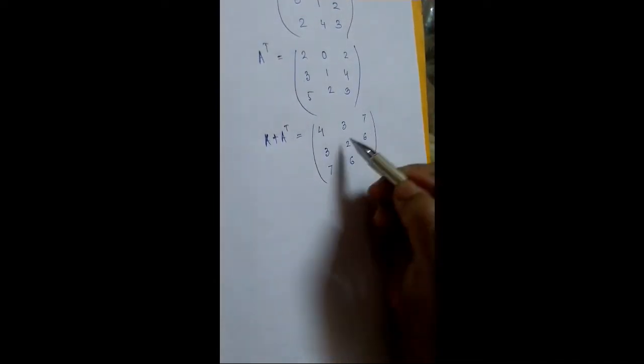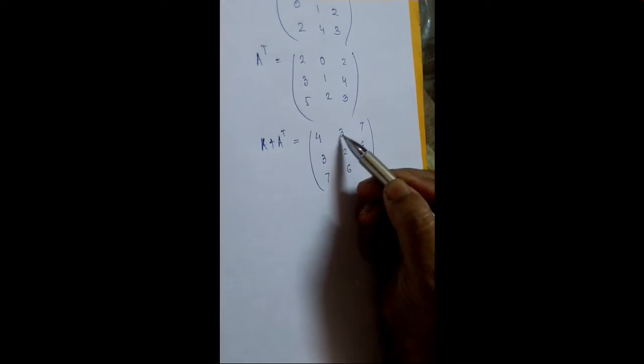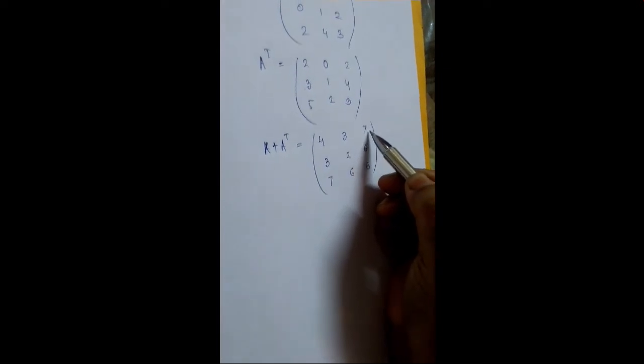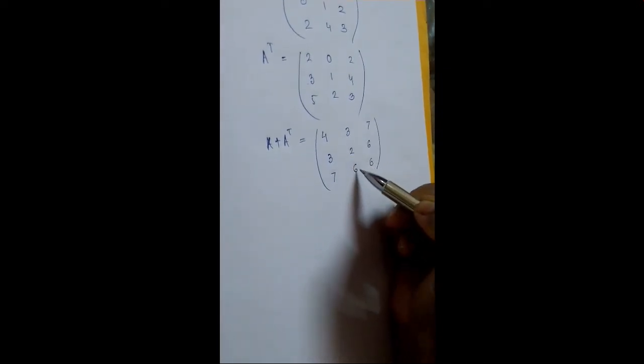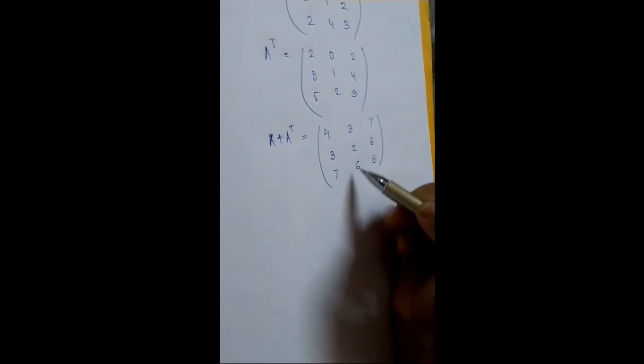Now let us check. The first column elements are 4, 3, 7 and the first row elements are also 4, 3, 7. Second column is 3, 2, 6 and the second row is also 3, 2, 6. Third row is 7, 6, 6 and the third column is also 7, 6, 6. Hence A plus A transposed is symmetric.